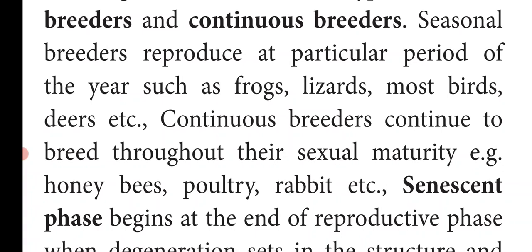For example, frogs usually breed during the rainy season. During the rainy season, you can hear the croaking sound of the frog. It is the signal of the male frog to attract the female frog for breeding.